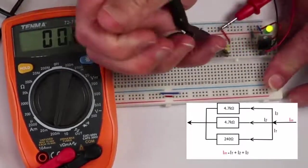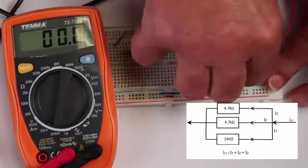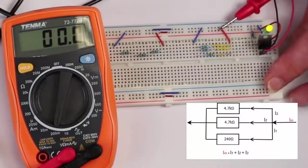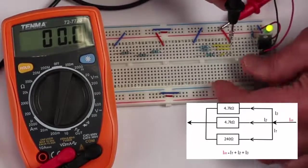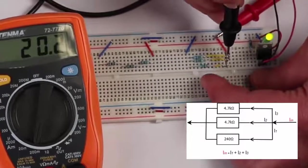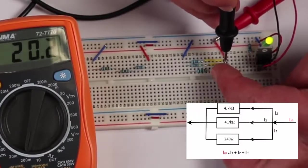I'm going to look at the current through the smaller resistor here now, which is 240 ohms. And we see it's approximately 20mA.